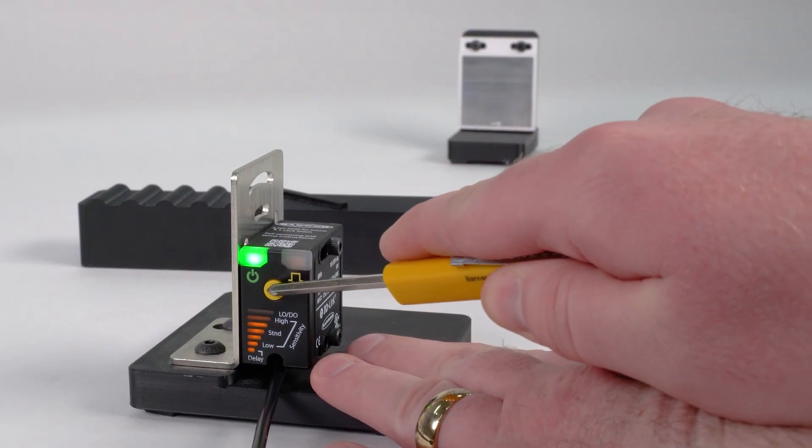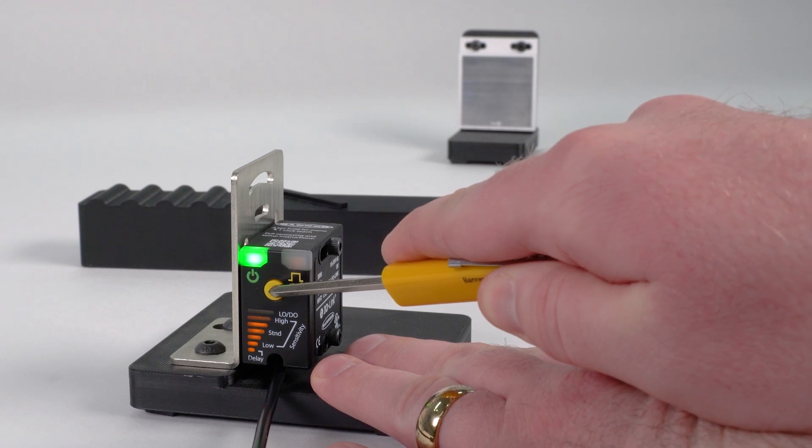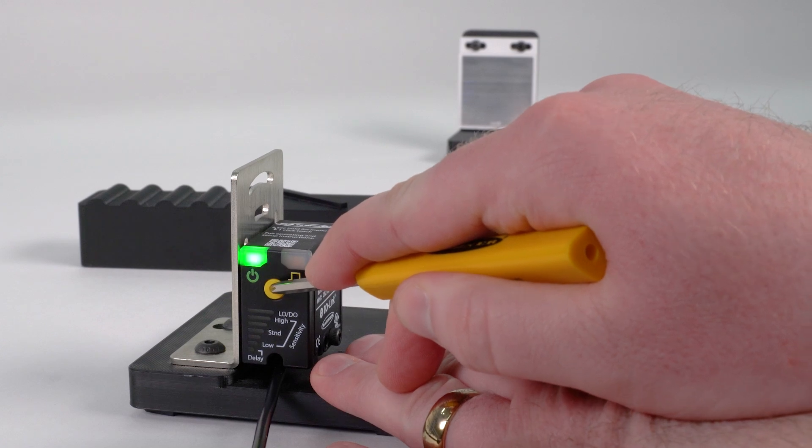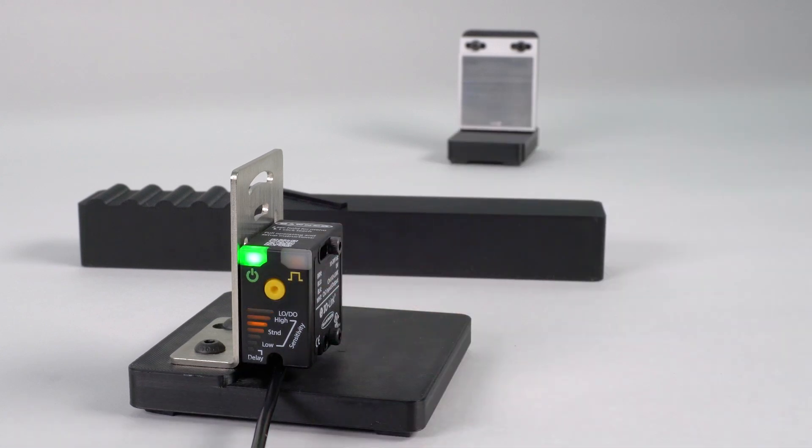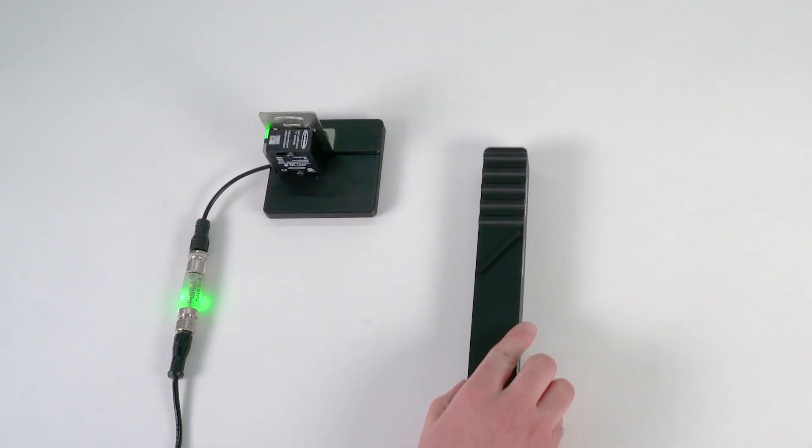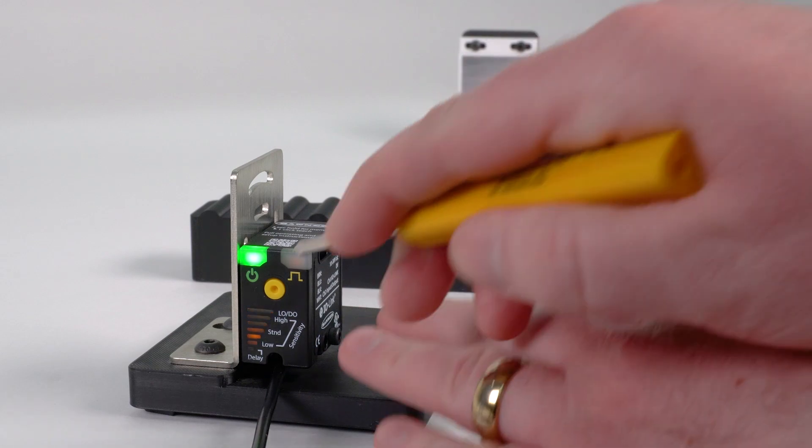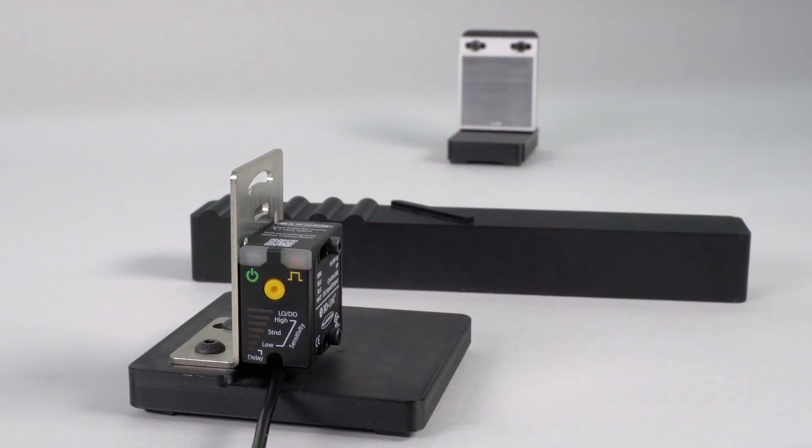To perform a dynamic teach, begin by putting the sensor into configuration mode and then press the button two times. The bar graph LEDs will begin cycling up and down to indicate that the teach process has begun. Present multiple obstruction conditions and then press the teach button one more time. The green and amber LEDs will flash twice to confirm that the teach was successful.